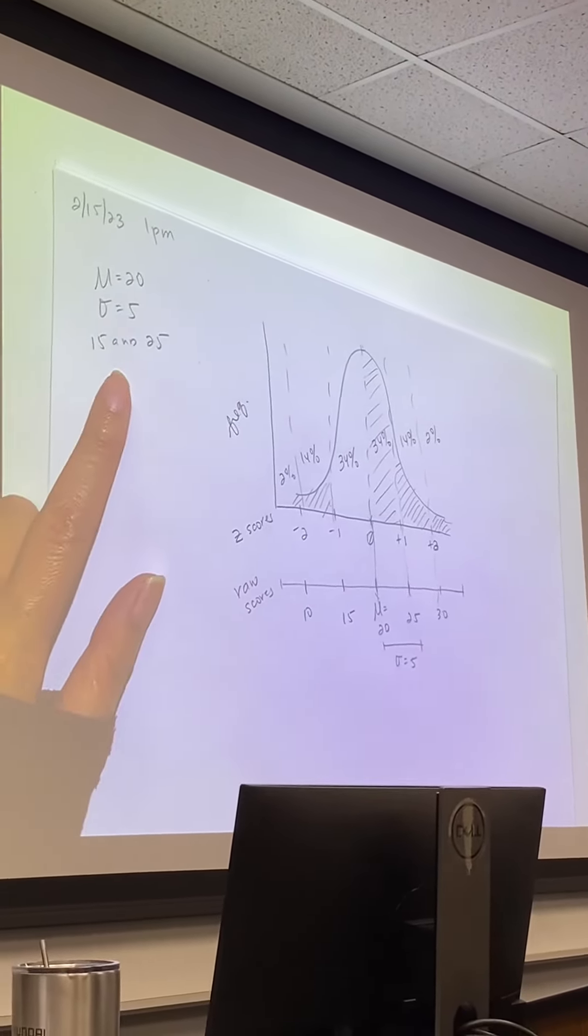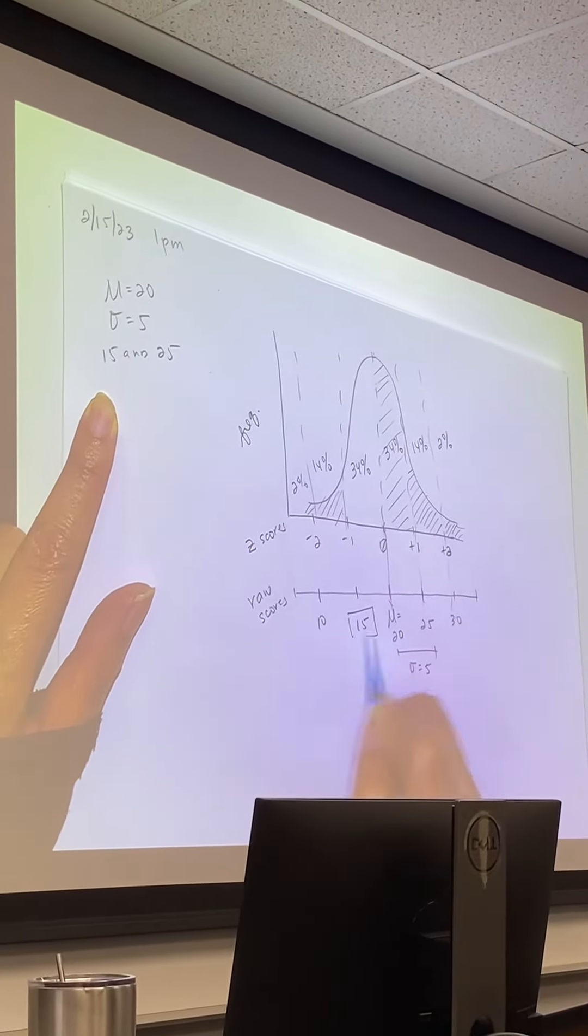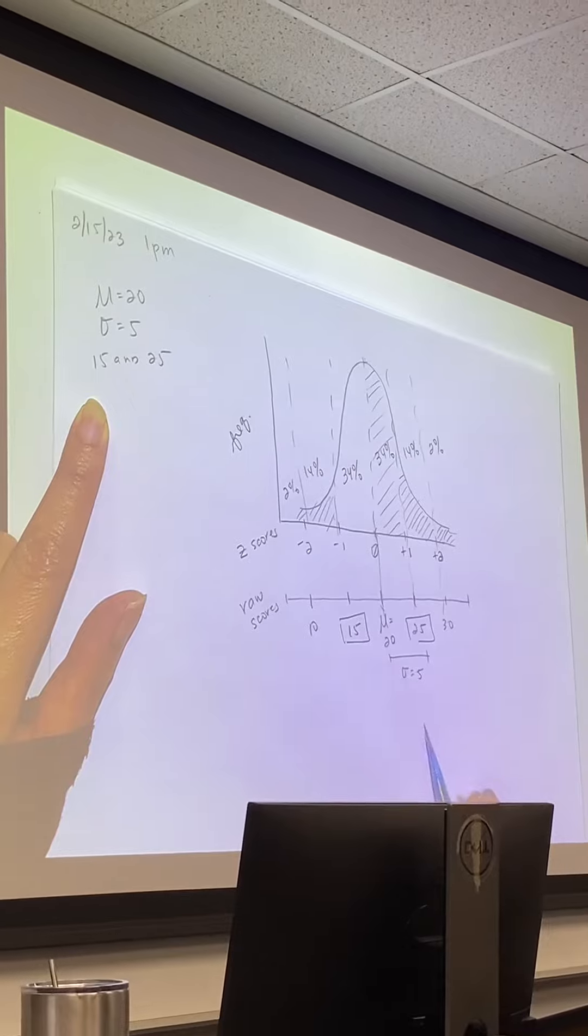So the question is, what percent of scores are between 15 and 25? We'll look up 15 and 25 here. And what do we have?